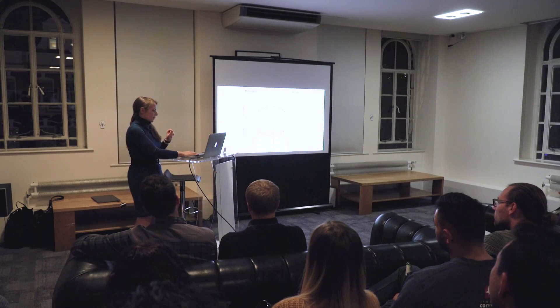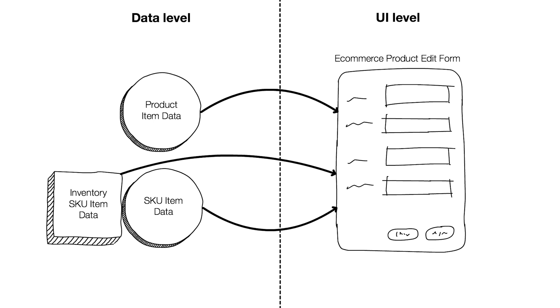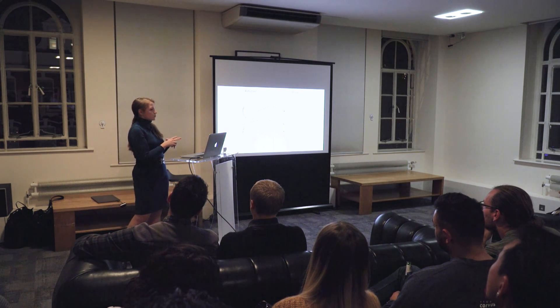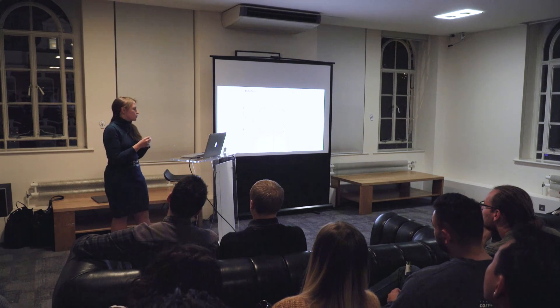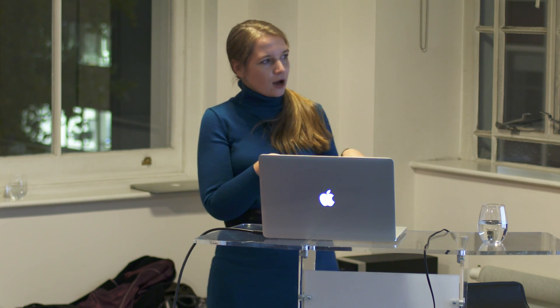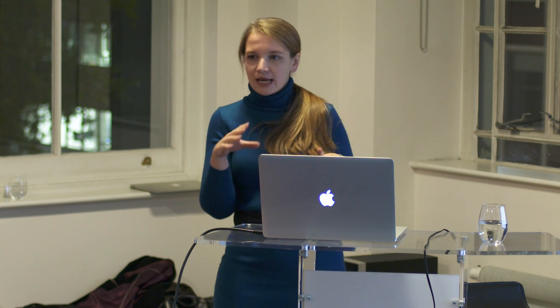The second iteration for the eCommerce Data Manager looked even more complex in terms of how data relates to the product item edit form. For one item edit form, already three sources of truth were needed: one corresponding to product data, one to SKU data, and one responsible for SKU inventory data stored separately. And you can imagine things become even more complicated when variants are included in the product. With nine variants, we have 19 sources of truth for one product edit form.